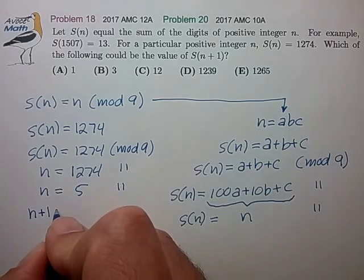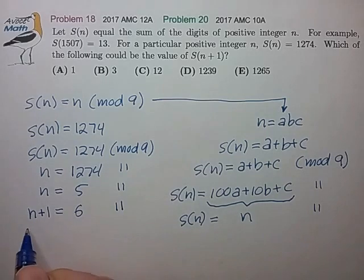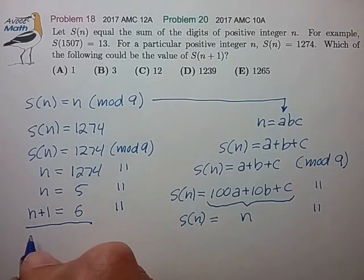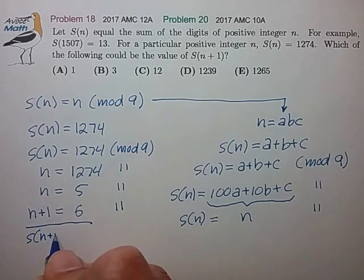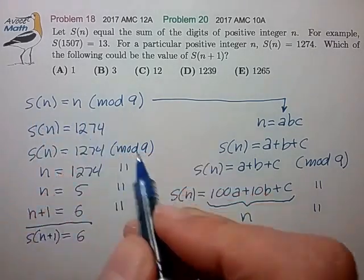From then we quickly find that n plus 1 is equal to 6 in mod 9. And this is the key relationship. We know that the sum of n plus 1 in mod 9 also has to equal 6 from this first relationship.